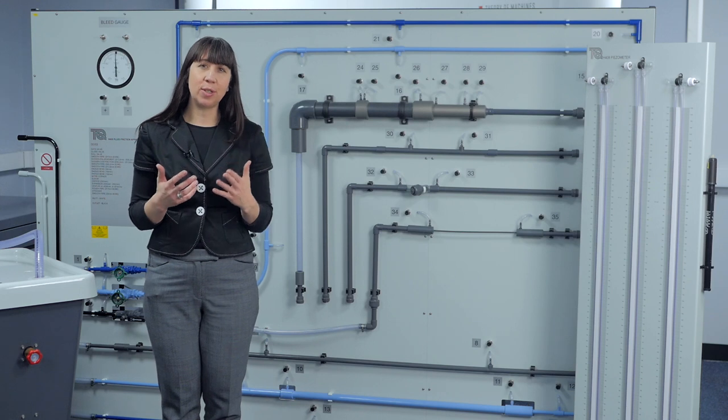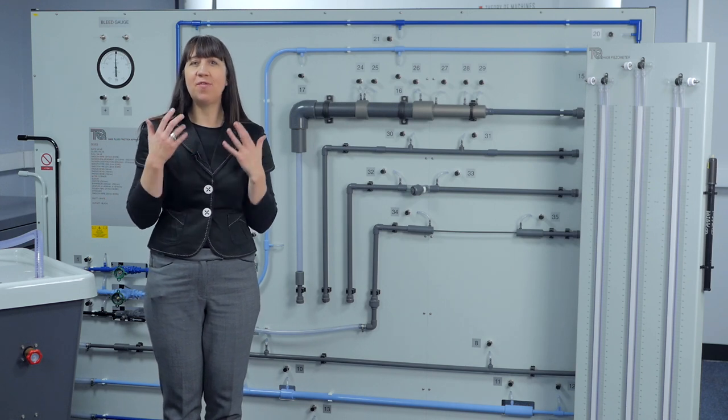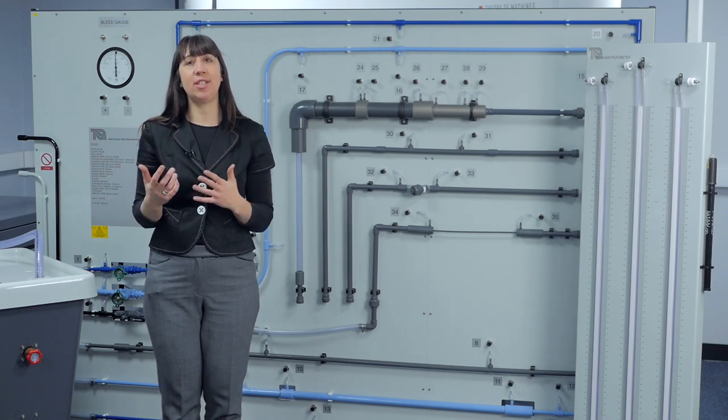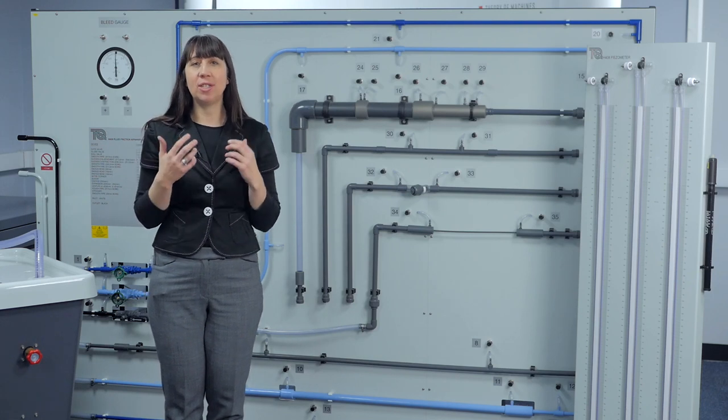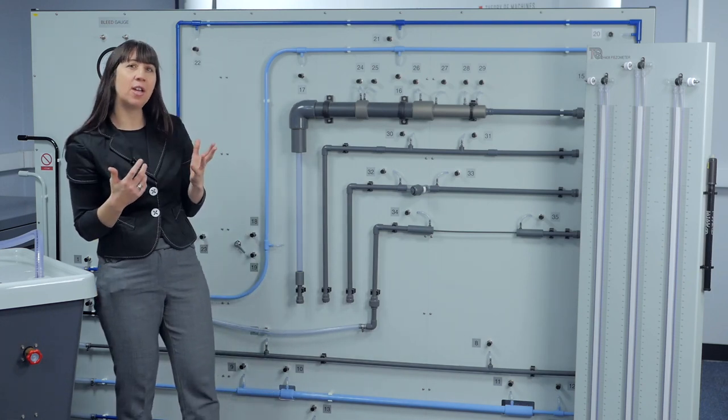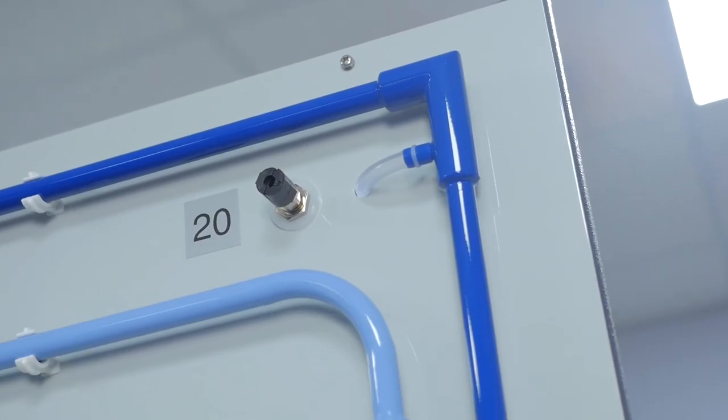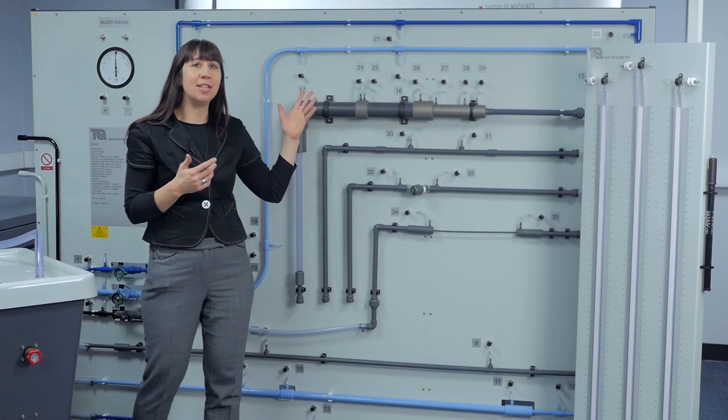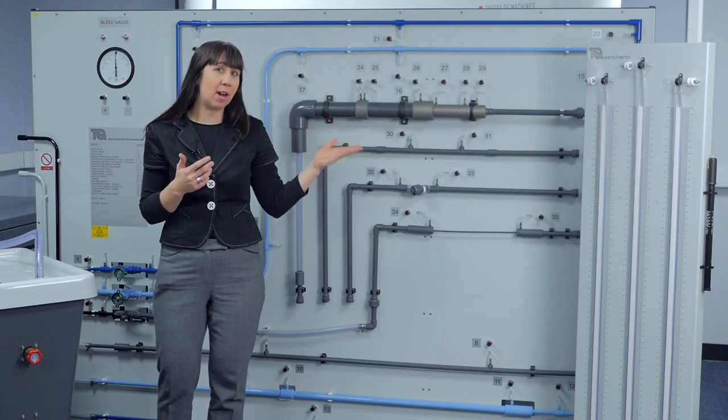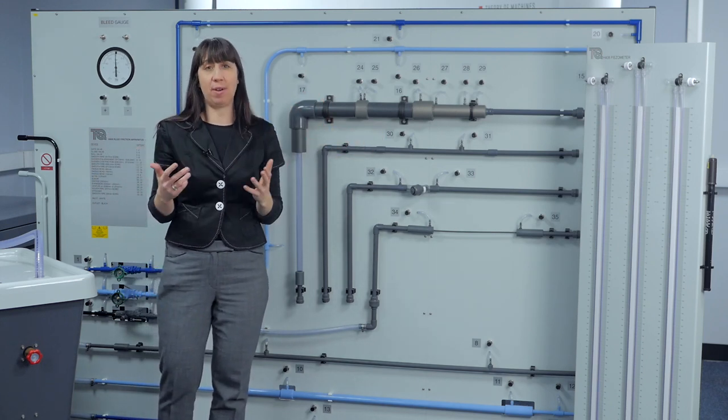This apparatus enables students to learn in practice that when there is friction, there is a loss of energy, and how this is affected using different pipes, fittings and valves. Students can examine in detail how pipe form factors such as bends and elbows, inline straightening and sudden expansion and contraction of pipes affect the flow rate.